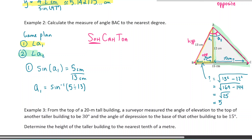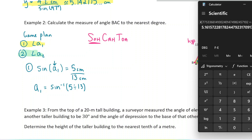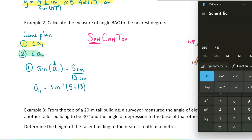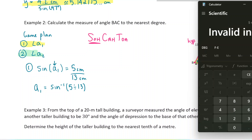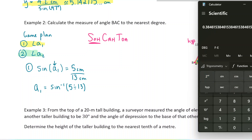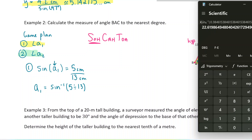We use inverse sine because we're solving for the angle — the inverse button handles that. In the calculator, I type 5 divided by 13 equals, then press inverse sine. I get 22.6 degrees. I'll keep a couple of decimal places to avoid rounding errors, so A1 is approximately 22.62 degrees.